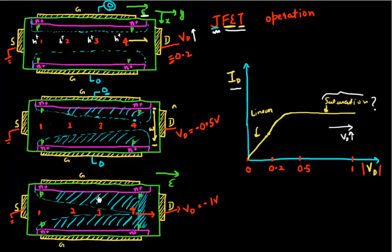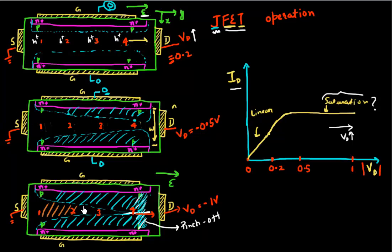Another question I get confused by: if these two depletion regions merge — the condition I call pinch-off — then this whole region is depleted. So where is the current flowing from? If this region is pinched off, where is the current flowing? Is this region completely pinched off, or is there a narrow conduit here for the holes to flow?